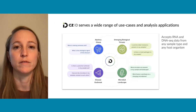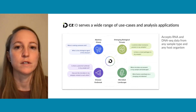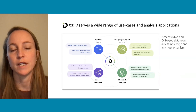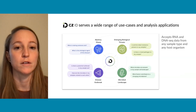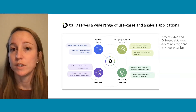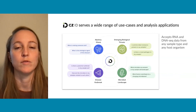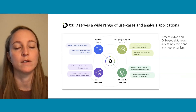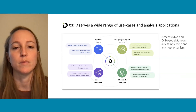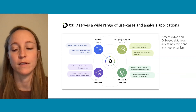Shown here are a couple of examples of the types of questions researchers are asking. We often see folks interested in understanding what is the etiologic agent of a particular disease, asking whether there are emerging biological threats, or across a cohort just understanding the landscape of organisms. And when folks have a particular organism of interest, they may be curious about whether there's a disease outbreak going on.